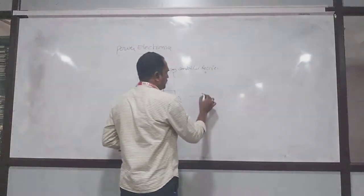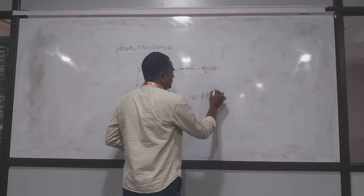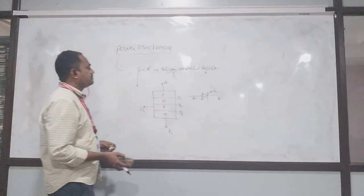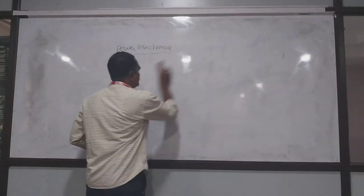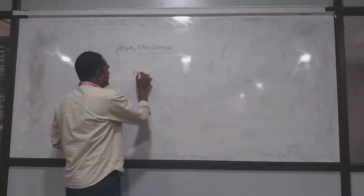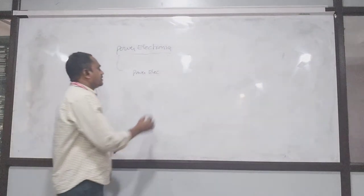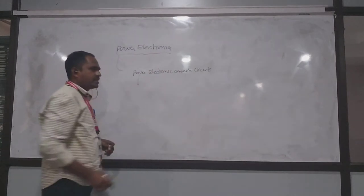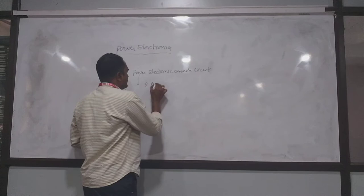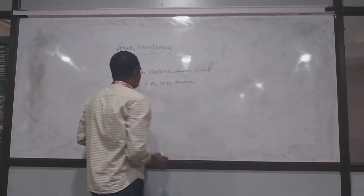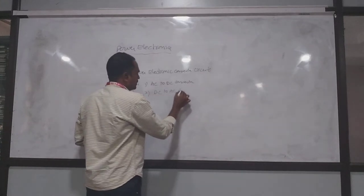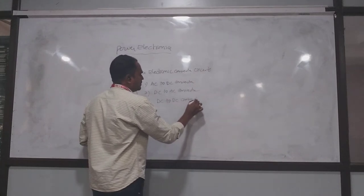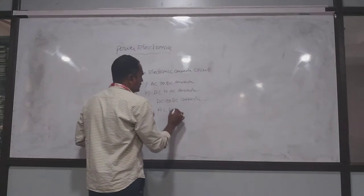By using these devices, we are going to construct circuits in power electronics, which are called power electronic converter circuits. There is a classification: the first one is AC to DC converter, second one is DC to AC converter, third one is DC to DC converter, and fourth one is AC to AC converter.